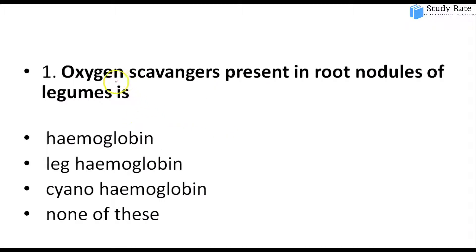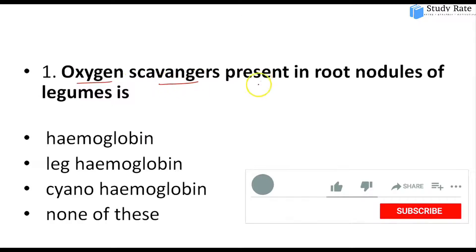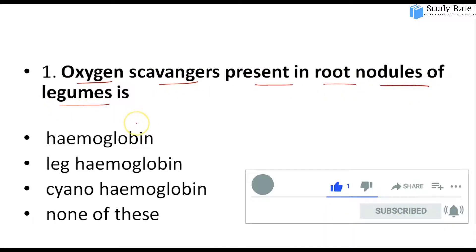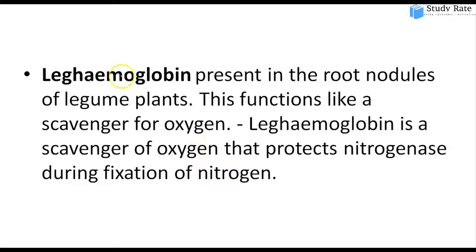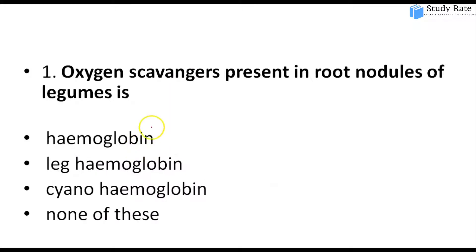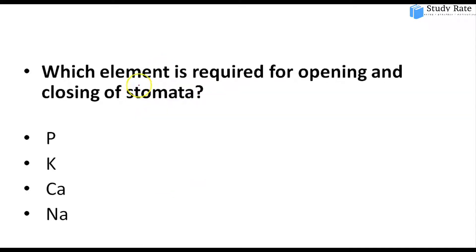Top 20 MCQs. First MCQ: Which oxygen scavenger is present in root nodules of legumes? Options: hemoglobin, leg hemoglobin, or syno hemoglobin. The answer is leg hemoglobin. Leg hemoglobin is present in root nodules of leguminous plants and acts as an oxygen scavenger. It protects the nitrogenase enzyme during nitrogen fixation.